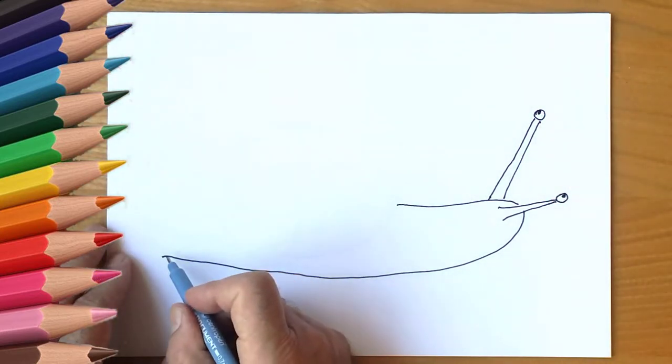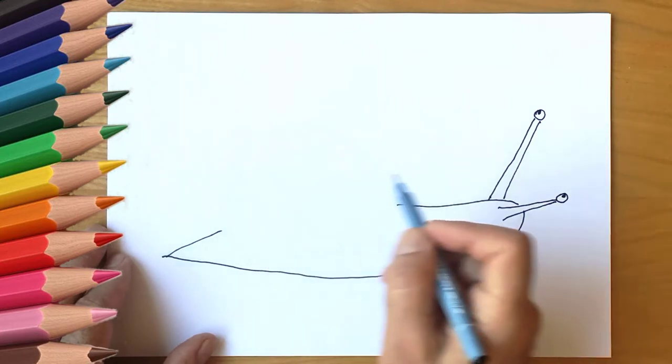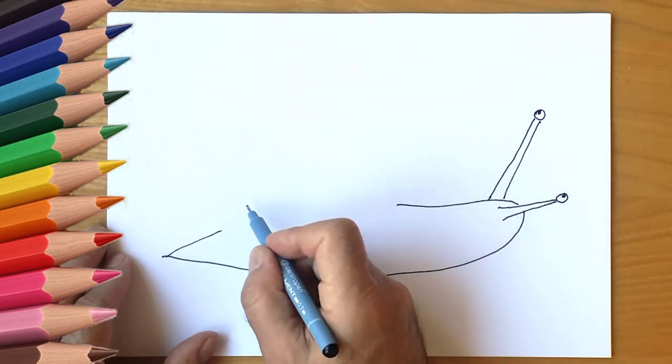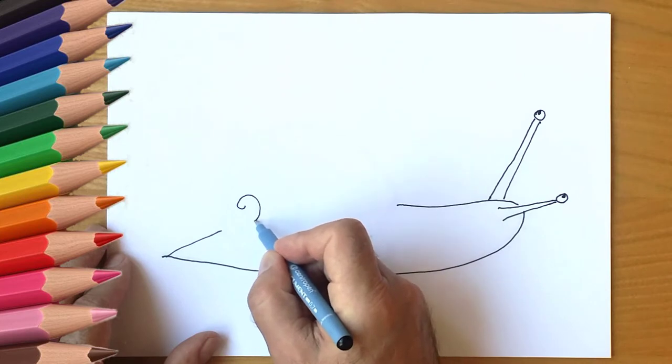Draw a house on the snail's back. This is a snail shell. He hides in a hut when he feels danger. Draw a snail hut with details.